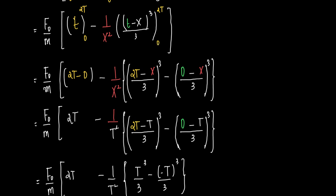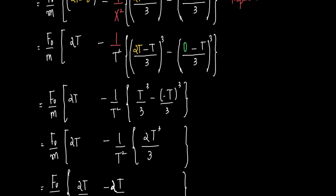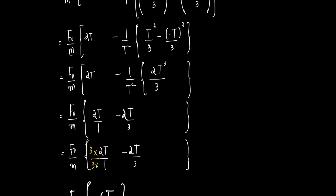Now replacing x back with T: the upper limit gives (2T - T)³/3 = T³/3, and the lower limit gives (-T)³/3 = -T³/3. So the second part becomes (1/T²) × [T³/3 - (-T³/3)] = (1/T²) × (2T³/3) = 2T/3. Combining: 2T - 2T/3 = 4T/3.